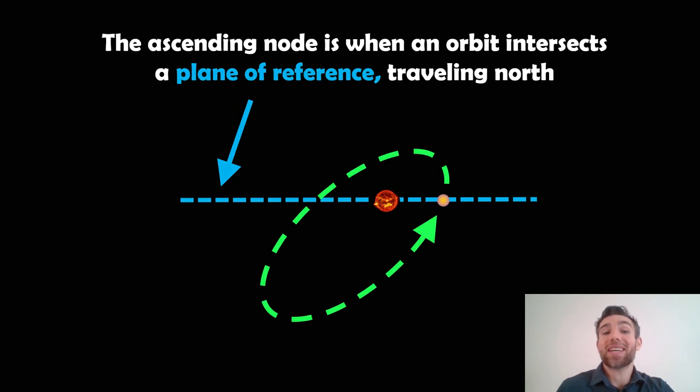It's going to intersect that plane of reference. Again, we're looking edge on, it's inclined. As it passes or it travels north, going upwards, going up through the plane of reference, that's going to be our ascending node. That's the position on its orbit as it passes through the plane of reference, traveling north.